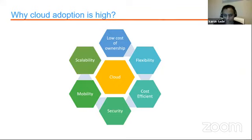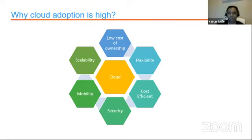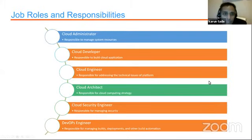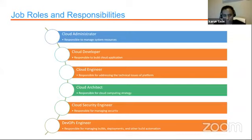Low cost of ownership — everything has moved from CapEx to an operational expenditure. Companies have diverted infrastructure cost to a pay-per-use model instead of putting a lot of money at the beginning during organizational setup. Talking about all these flexibilities before going to jobs, roles, and responsibilities — because of all these flexibilities that come with the cloud, adoption has gone up by leaps and bounds.